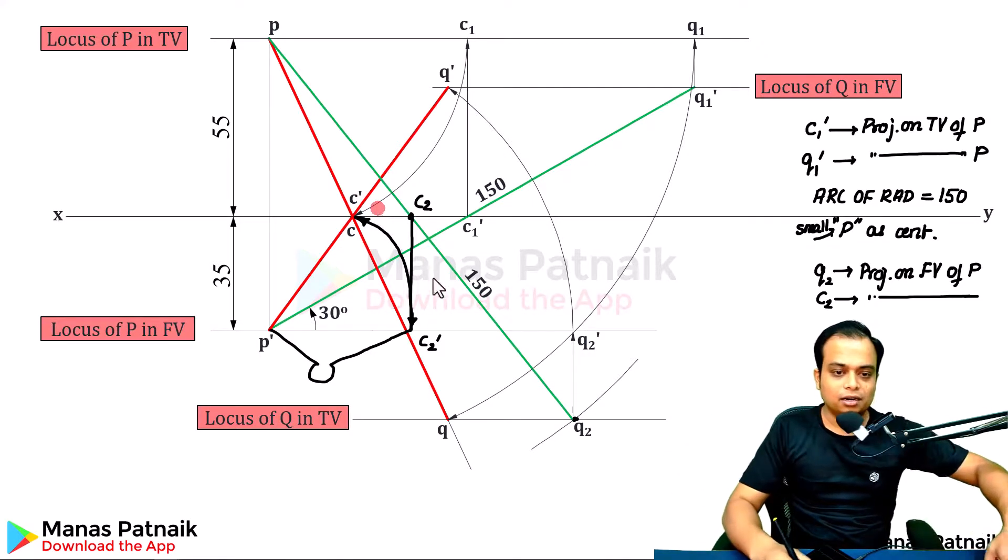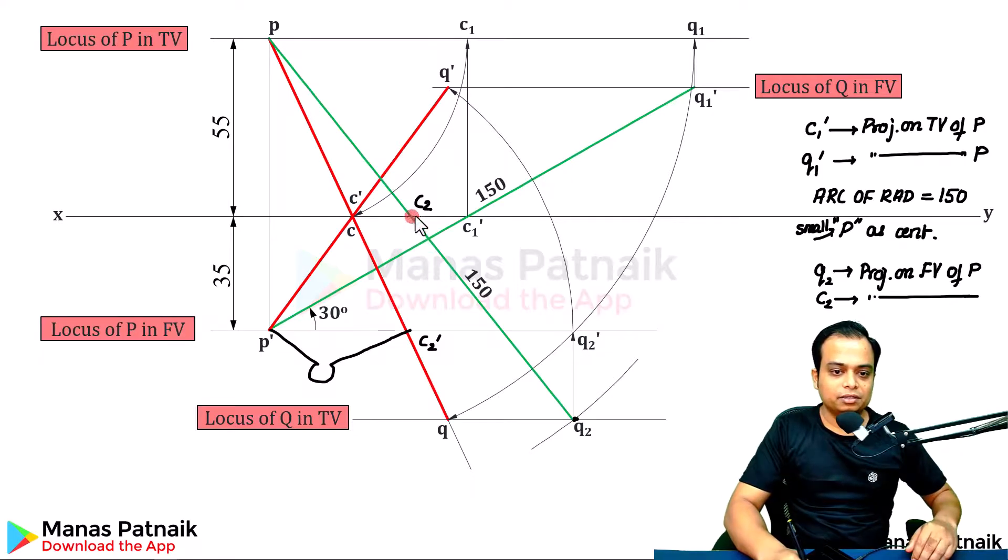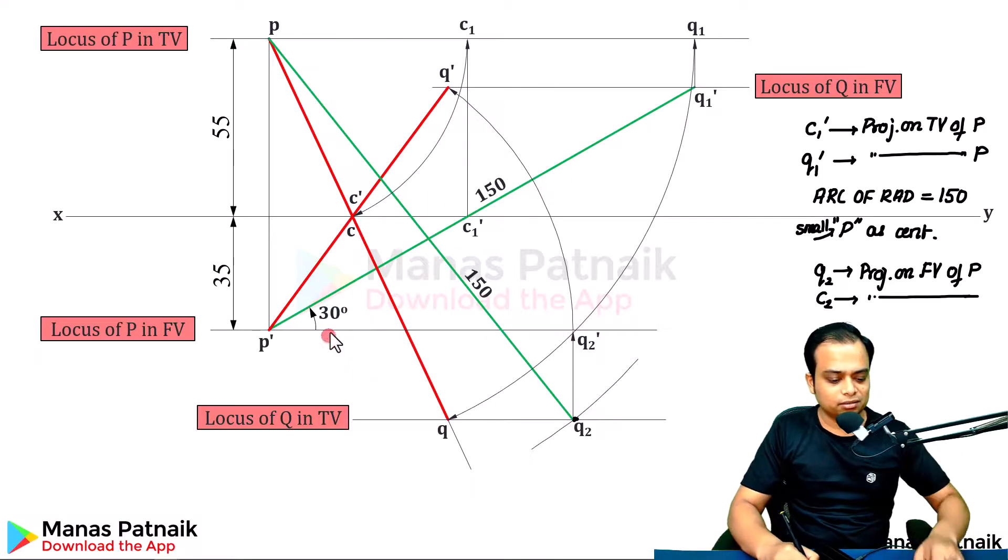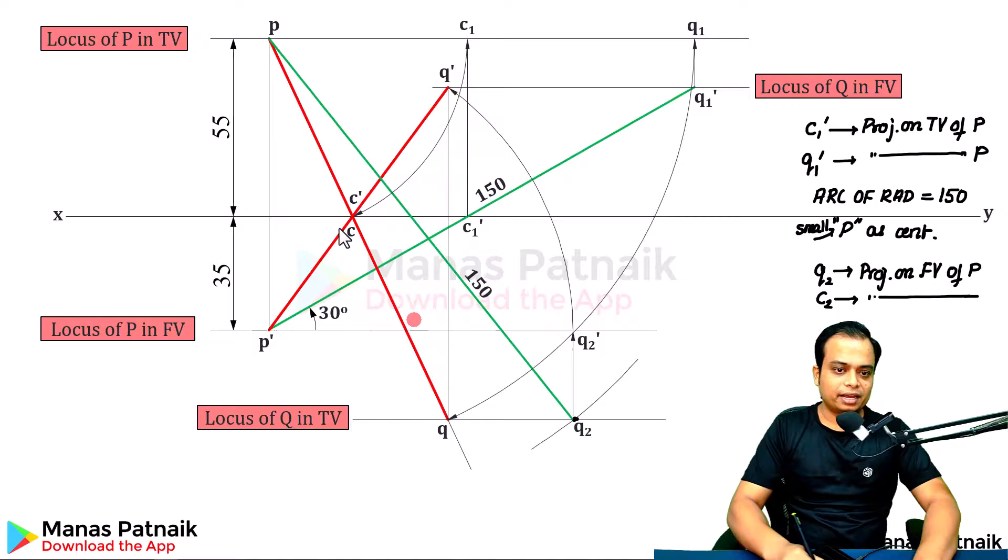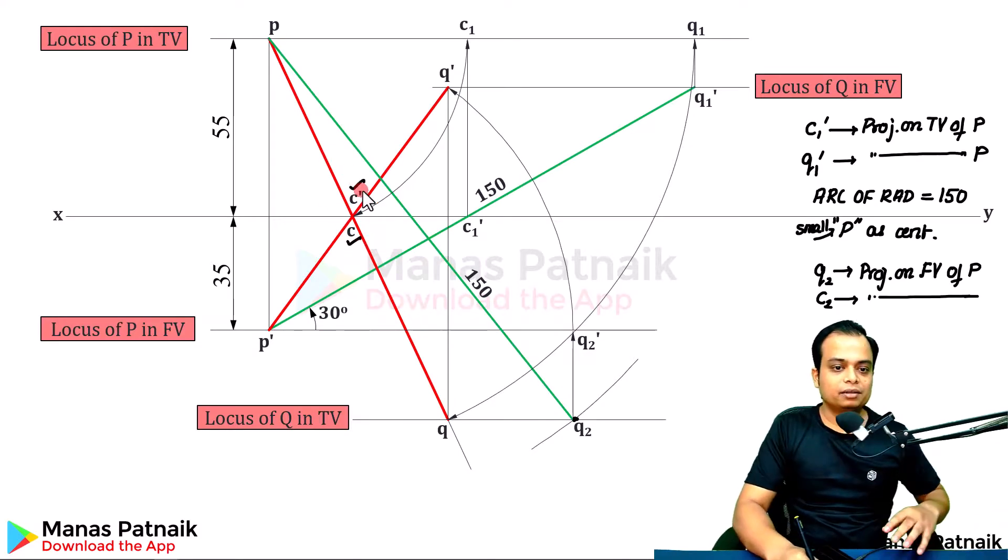For the time being, let me erase these things. They are not needed. Follow the shortcut. You can clearly see this Q dash and Q will also be along the straight line. And C dash and C, well, they are coincident.